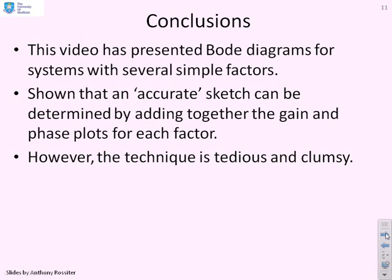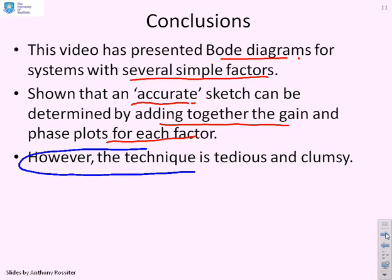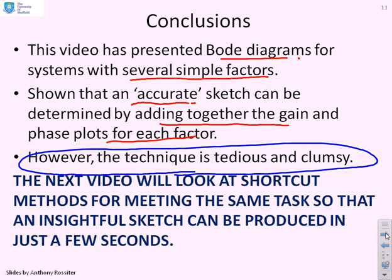So some conclusions. We've shown how you can get Bode diagrams for systems with several simple factors. And we've shown that you can get a fairly accurate sketch by adding together the gain and the phase plots for each factor. But critically, this technique is tedious and clumsy. So the next video is we're going to look at using the same insights and methods that we've seen here, but something a lot more insightful so you can get the sketch in just a few seconds.